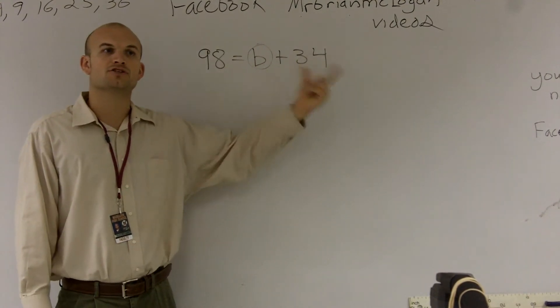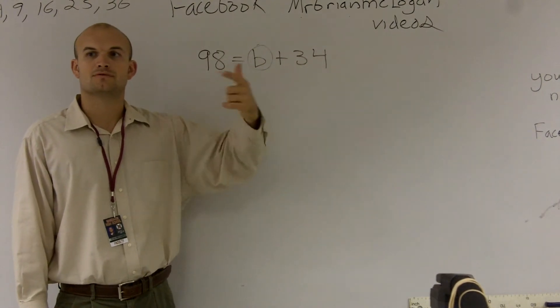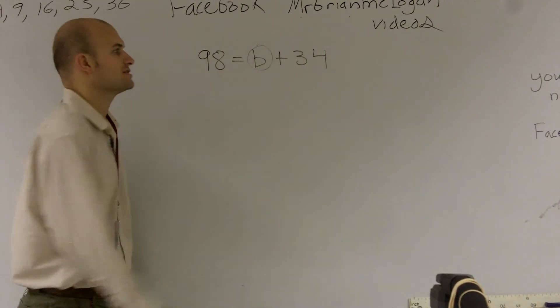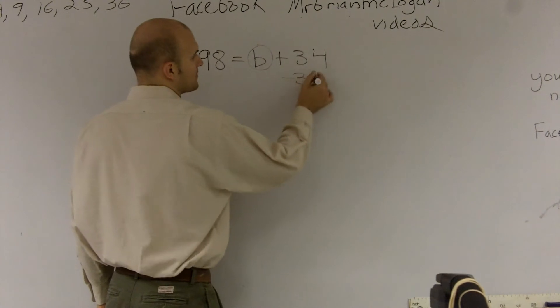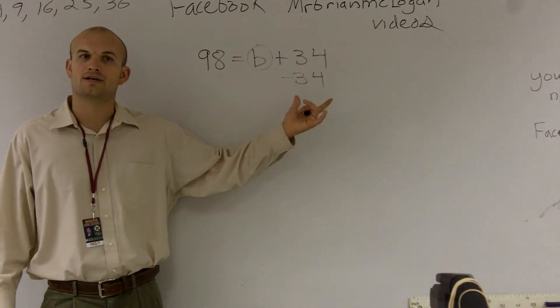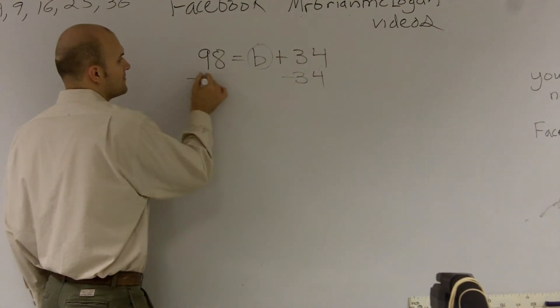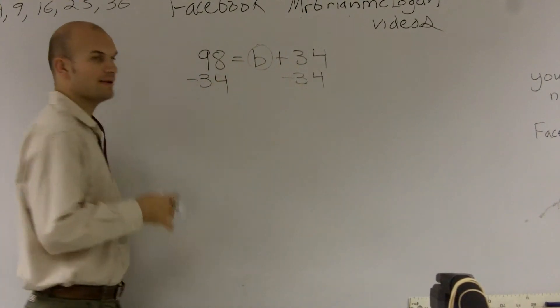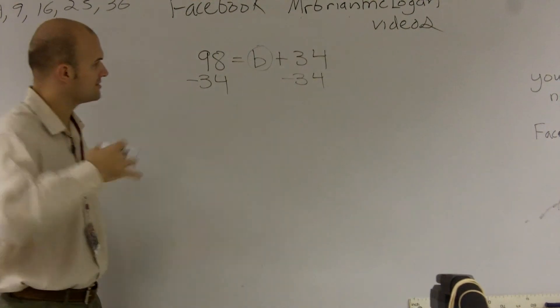So if we want to undo addition, we have to do subtraction. So you're going to want to subtract 34. Now, whenever you subtract on the right side by the property of equality, you have to make sure you subtract on the left side. Remember, that makes the equation even.